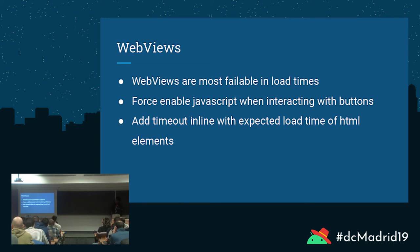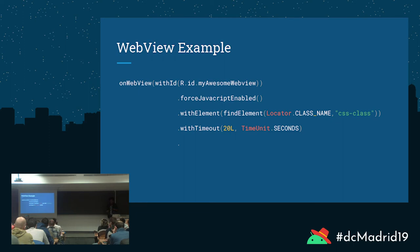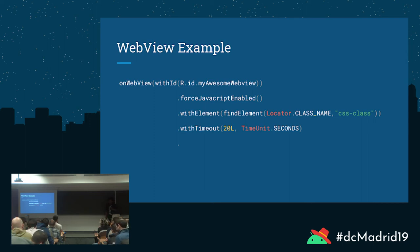Web views are not fun to write with Espresso. They are most problematic at load time, mostly because you're waiting for content to load. My recommendations: force JavaScript to be enabled so your test can find specific elements in a web view, and add timeouts especially if you're waiting on an element. The difference with web views is you won't be using onView or withContentDescription — you'll be using web matchers with element class names, which are CSS classes.